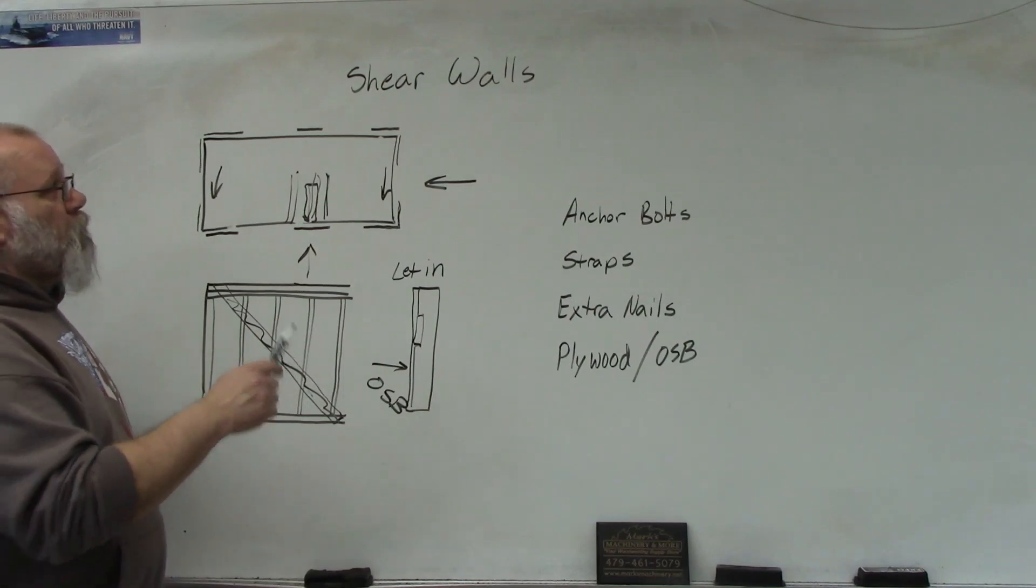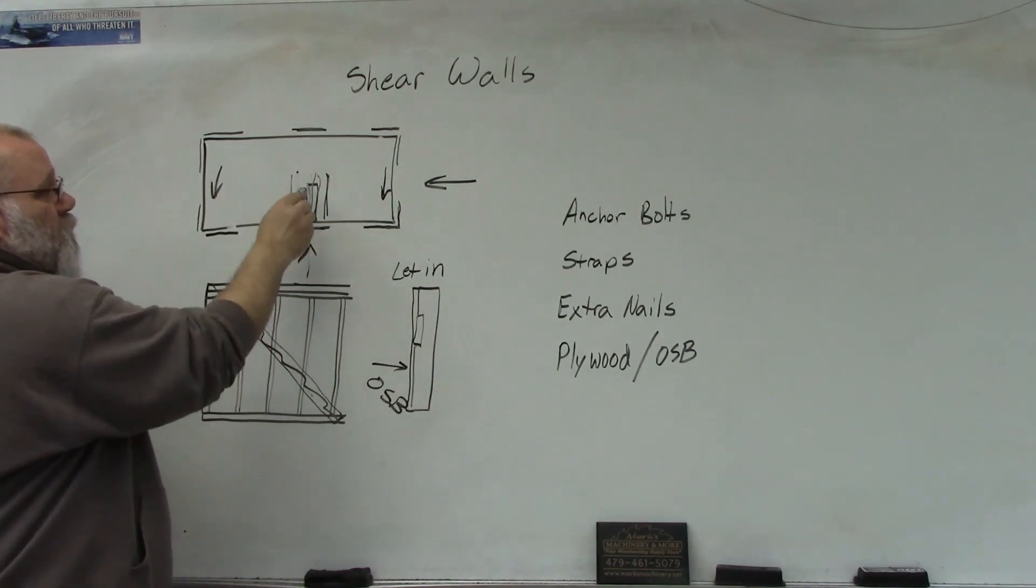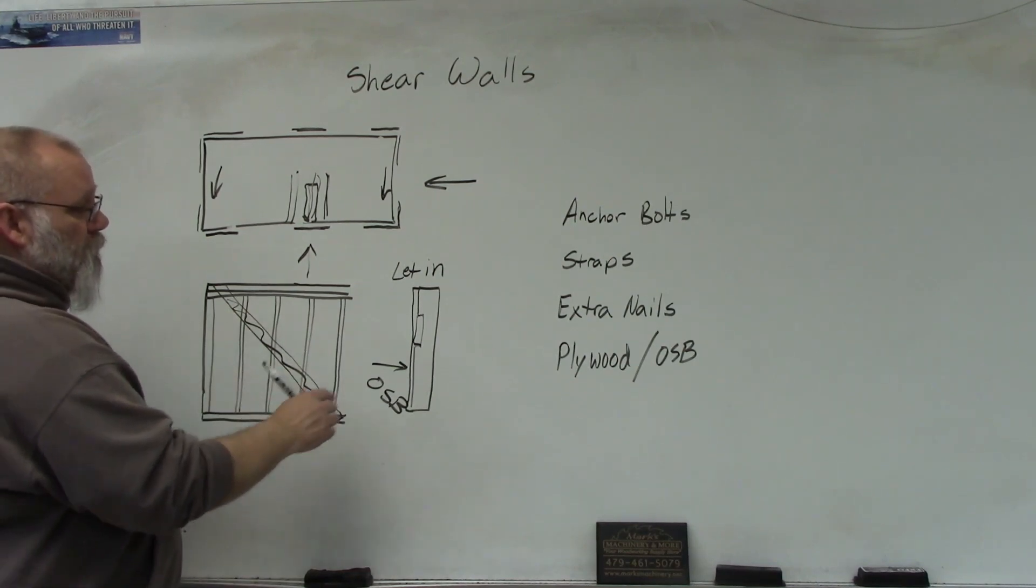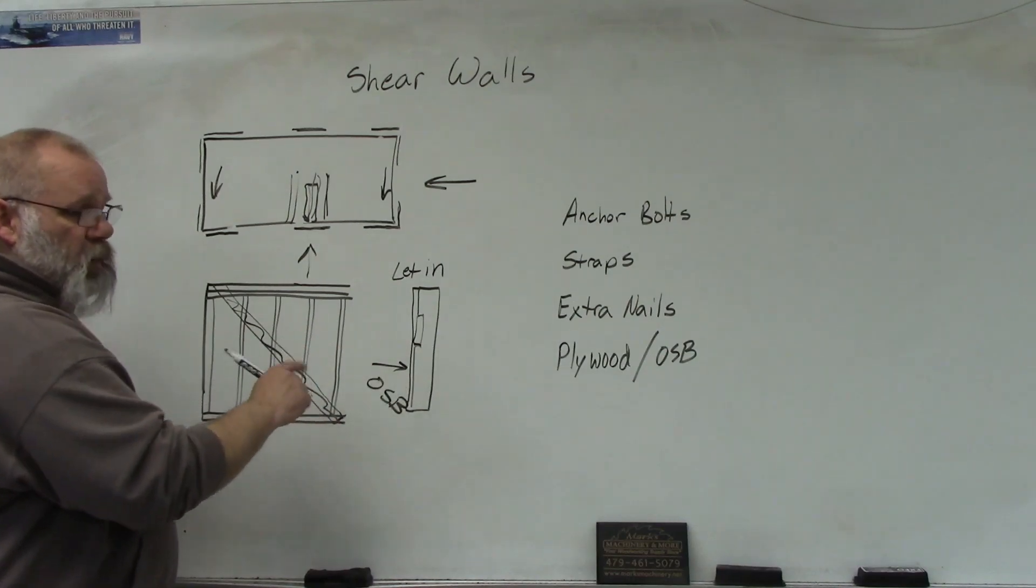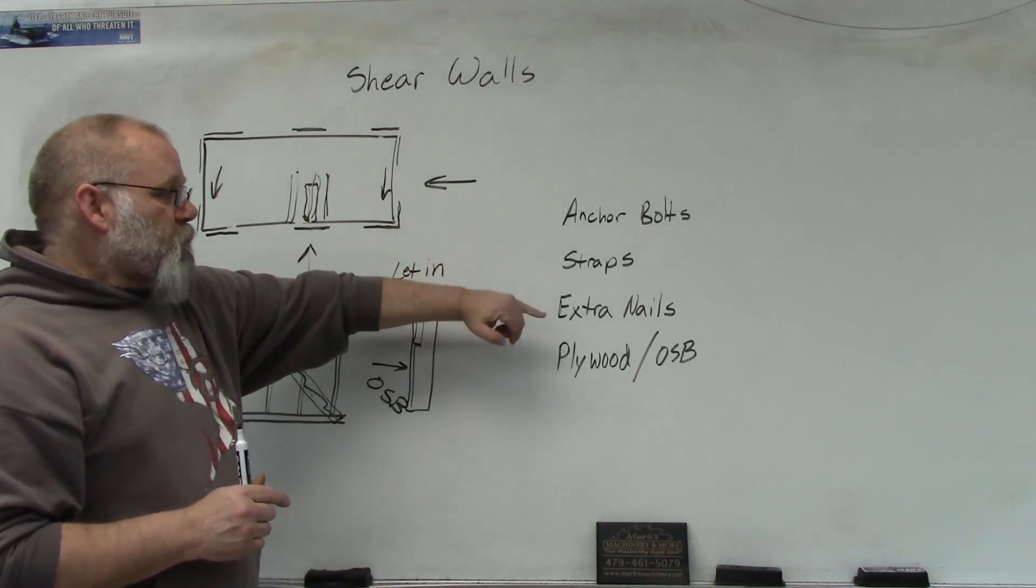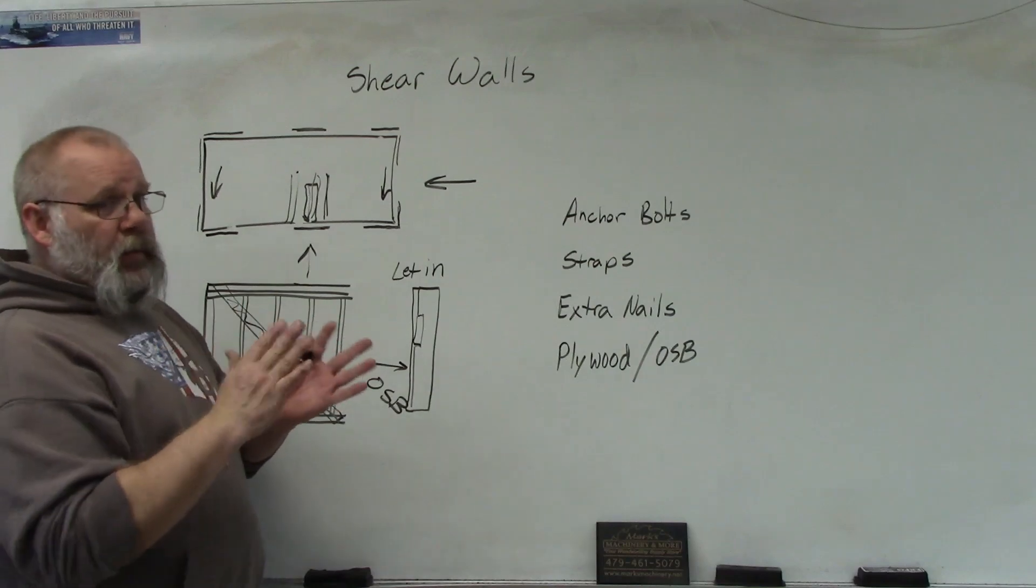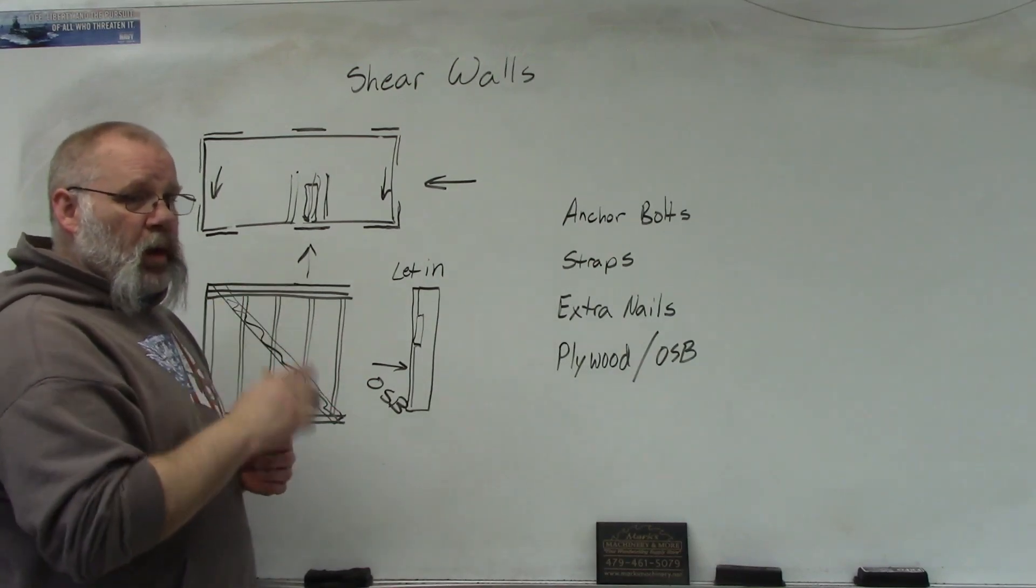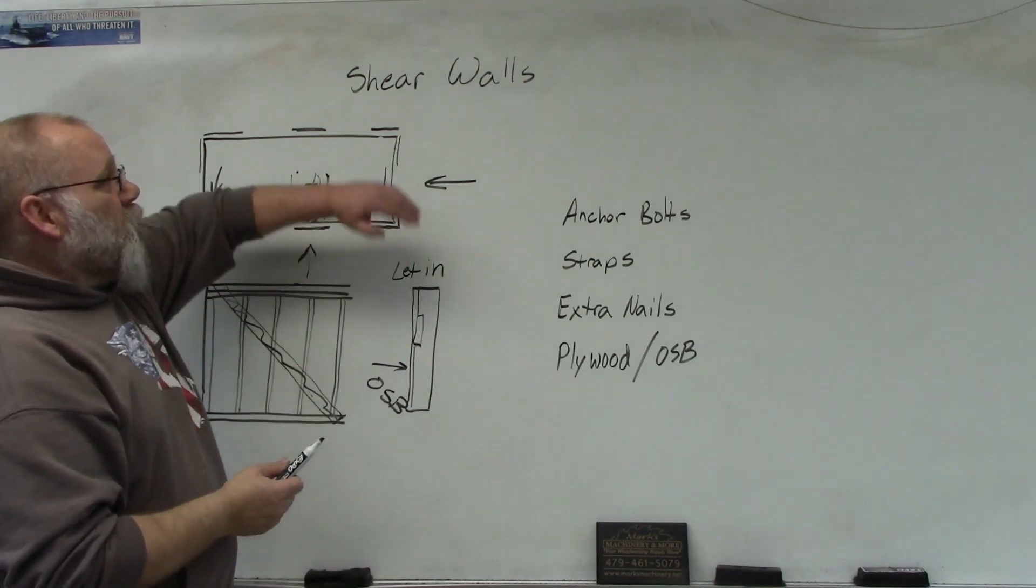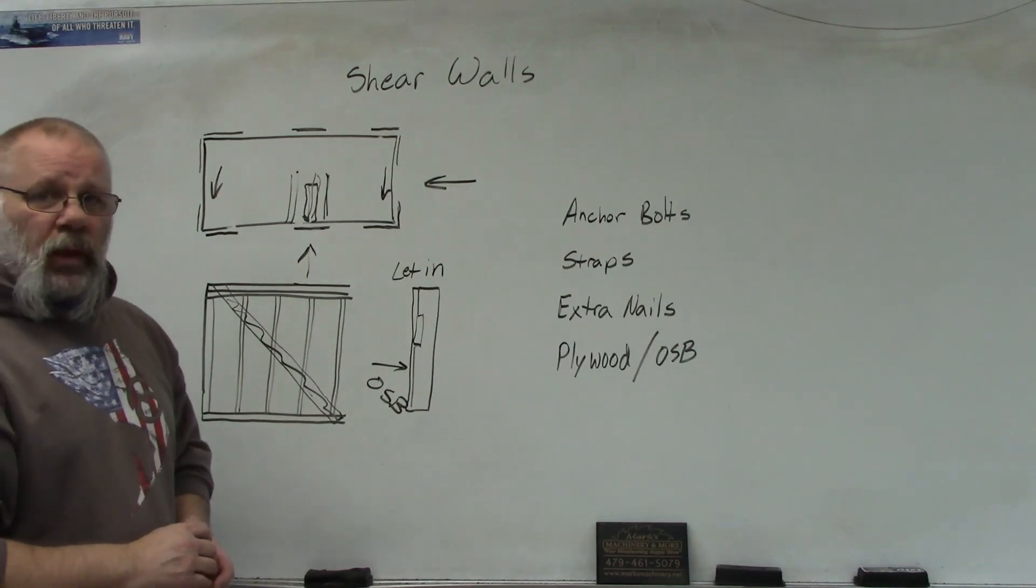So recap, shear walls, mostly on the corners, sometimes along the long runs of a house, sometimes they'll be built in the interior. Old style, pre-1980, they'll probably be a let-in brace. After that, they'll probably be sheeted with OSB or plywood, they'll use extra anchors on them, straps, extra nails. They'll either be a plywood or an OSB to reinforce your house so that it doesn't rack back and forth in an earthquake, or get a straight line wind that hits your side of your house and doesn't want to blow it over. That's shear walls, and make sure you follow codes when you have to replace them.